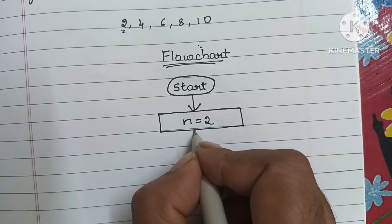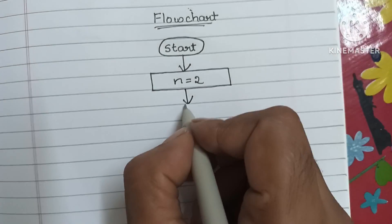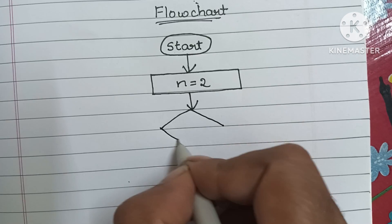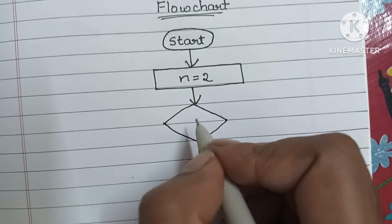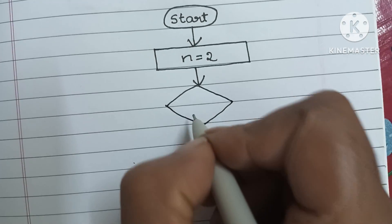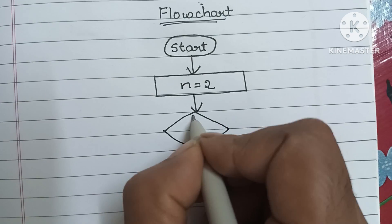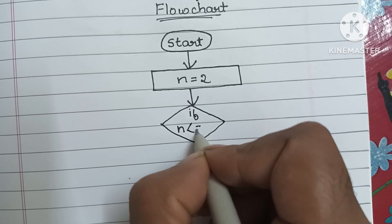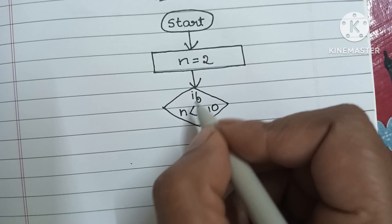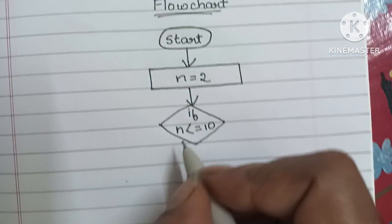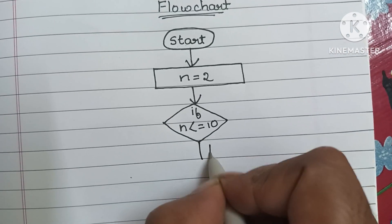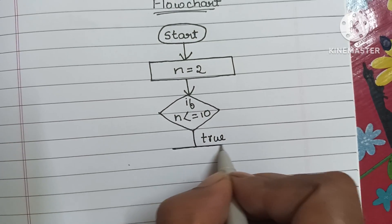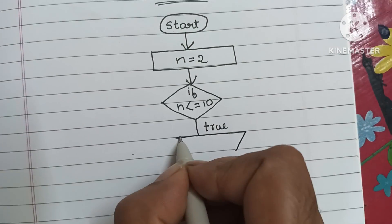The next step is comparison, which is done within a diamond shape. So we draw a diamond shape and within it we compare: if n is less than or equal to 10. If n is less than or equal to 10 and this condition is true, we have to print the n value.